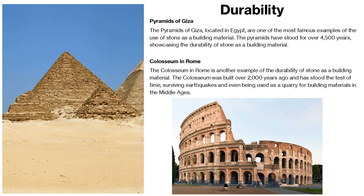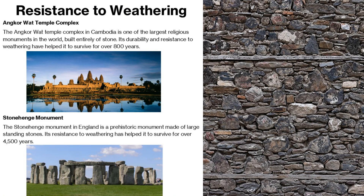When we talk about durability, the Pyramids of Giza and the Colosseum in Rome are two important and iconic examples. The pyramids have stood for over 4,500 years, showcasing the durability of stone as a building material. The Colosseum in Rome is another example — it was built over 2,000 years ago and has stood the test of time, surviving earthquakes and even being used as a quarry for building materials in the Middle Ages.